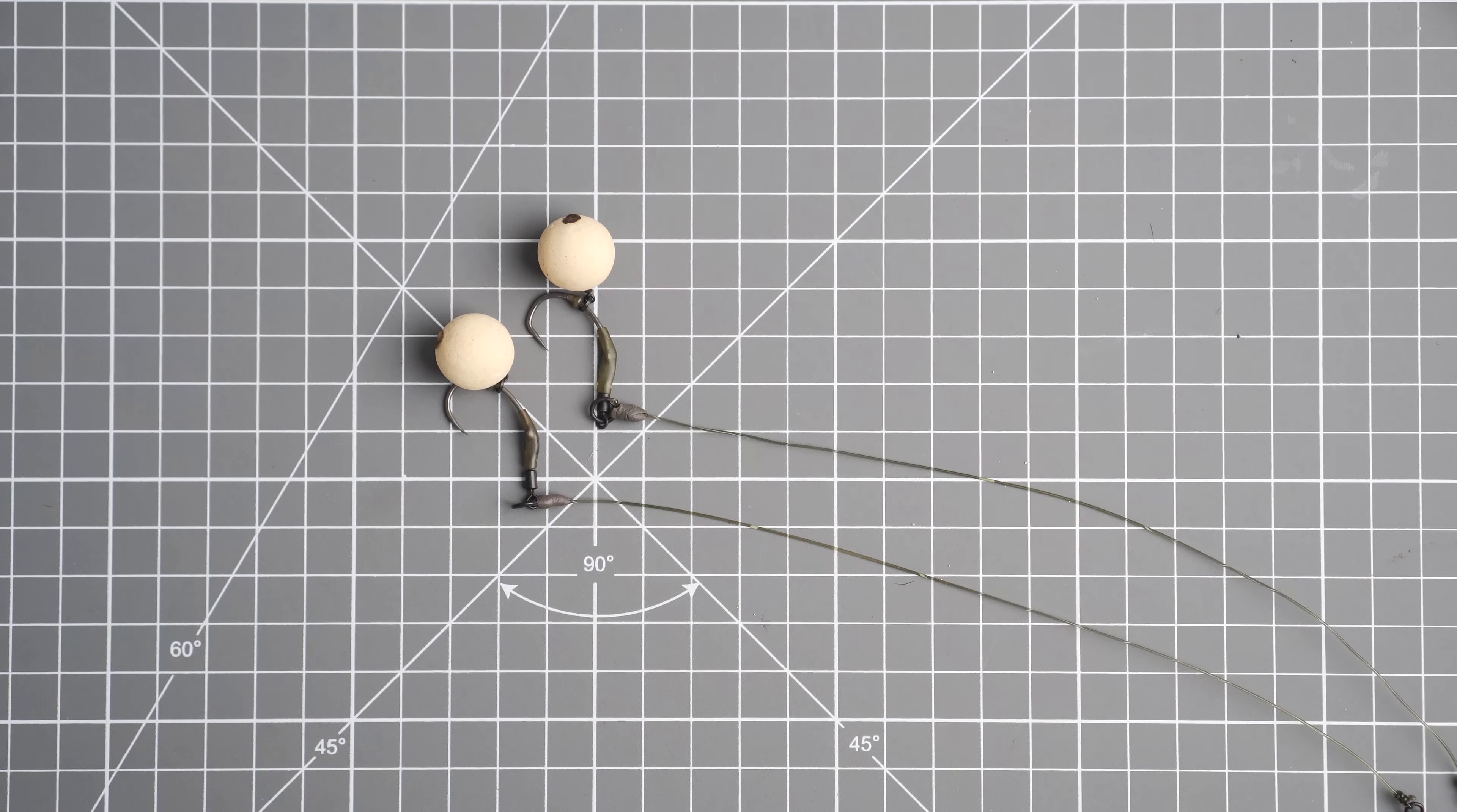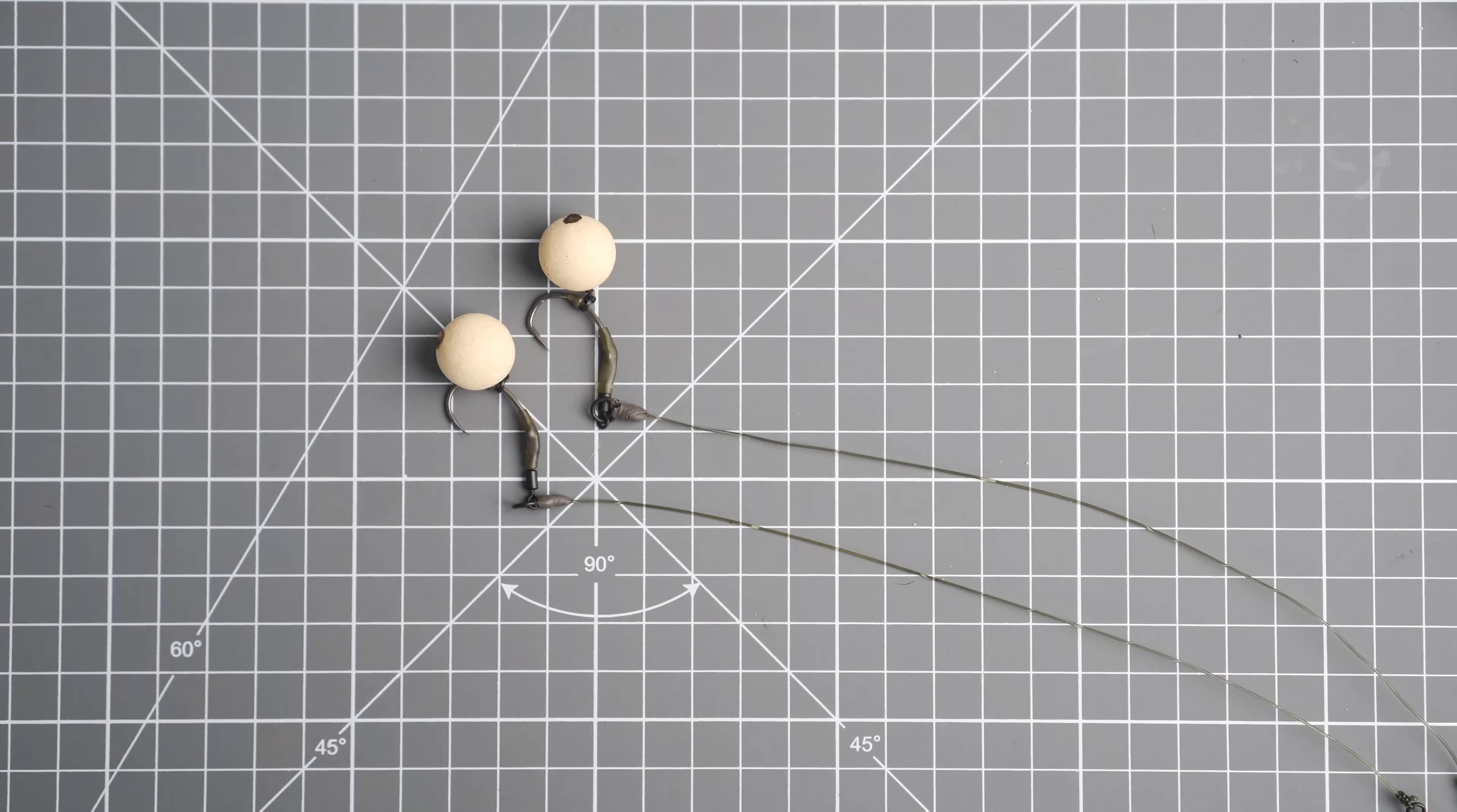And those are the two Klinger hook Ronnie rigs. So there you go folks, that's the finished rig. So don't forget to like, subscribe and hit that notification button. And remember before you go, it's up to you to ensure your rigs are safe. So I'll see you next time.